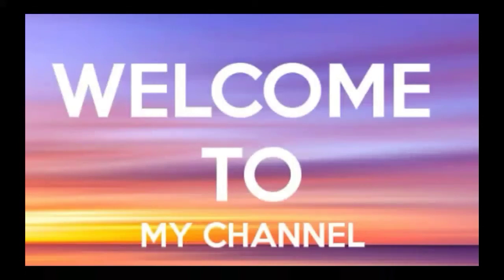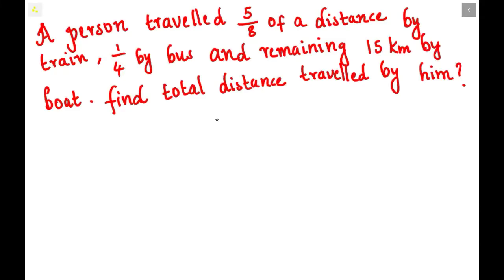Welcome to my channel. We are going to solve a new problem: a person travels 5/8 of a distance by train, 1/4 by bus, and the remaining 15 kilometers by boat. Find the total distance traveled by the person.